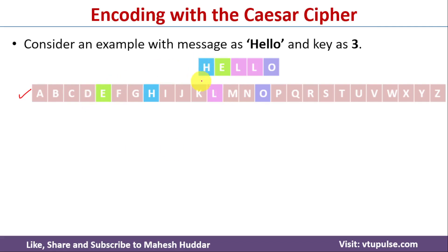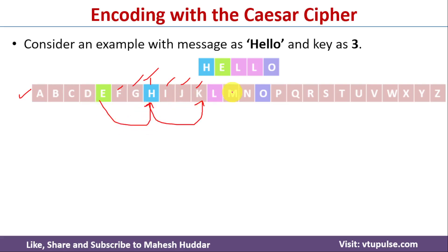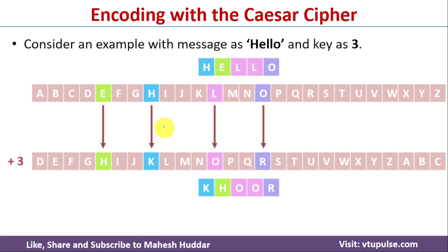For H, we need to count 3 numbers forward, so H will become K. For E, shifting 3 positions, E will become H. For L, shifting 3 positions, L will become O. And for O, shifting 3 positions, O will become R. So the encrypted message for 'hello' is K, H, O, O, R.